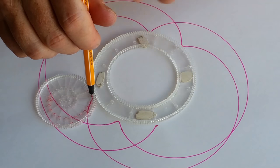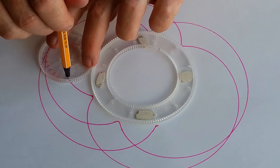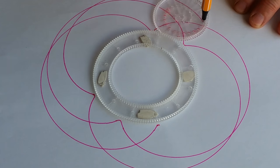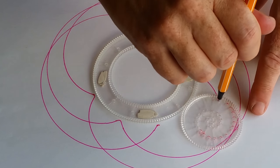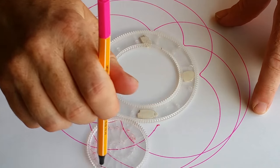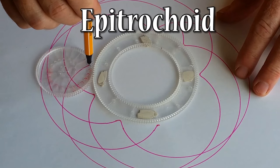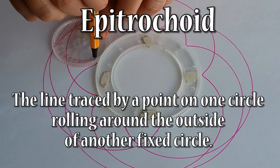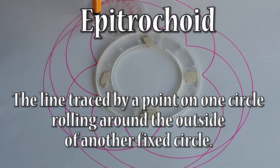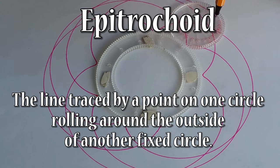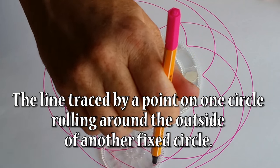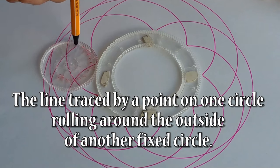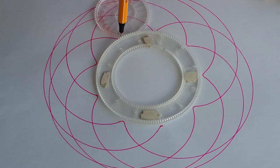There's actually a different name for designs drawn on the outside of the ring. They're called epitrochoids. The ones inside the ring are called hypotrochoids. Epi means on the surface there.